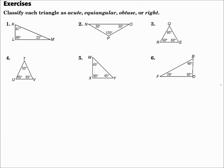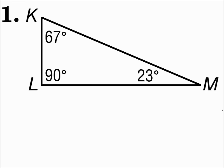Classify each triangle as acute, equiangular, obtuse, or right. For number one, look at the angle measures. This one has a right angle, so it's a right triangle. Right triangles have one right angle.